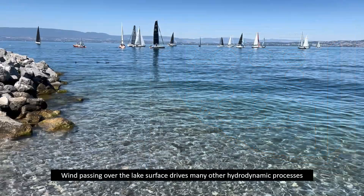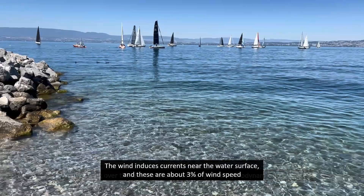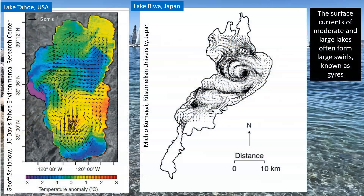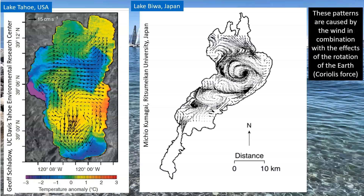Wind passing over the lake surface drives many other hydrodynamic processes. The wind induces currents near the water surface and these are about 3% of wind speed. The surface currents of moderate and large lakes often form large swirls known as gyres. These patterns are caused by the wind in combination with the effects of the rotation of the earth — that is, Coriolis force.